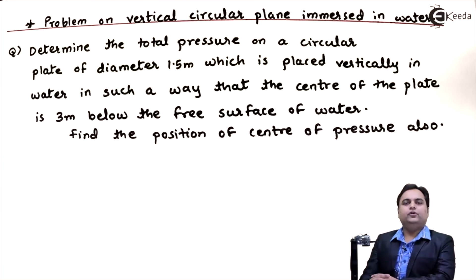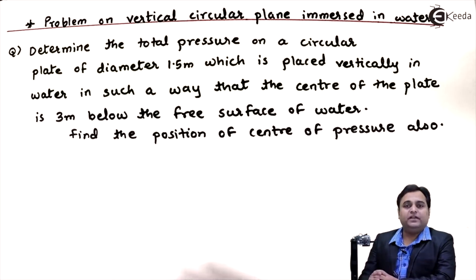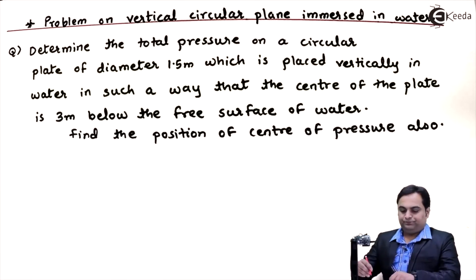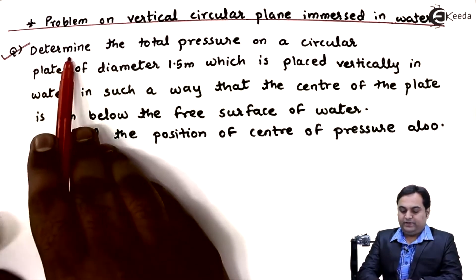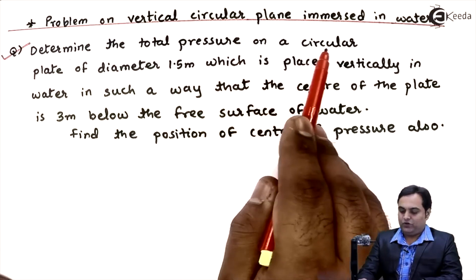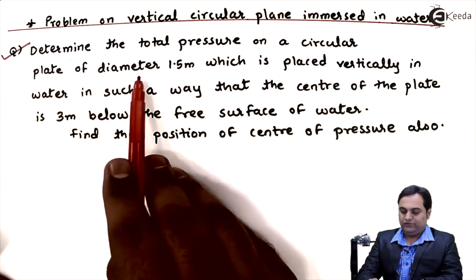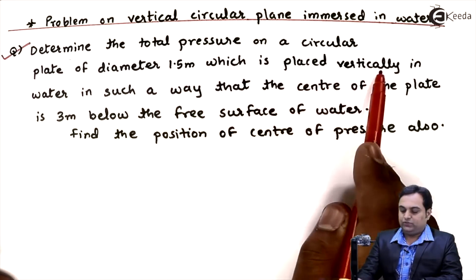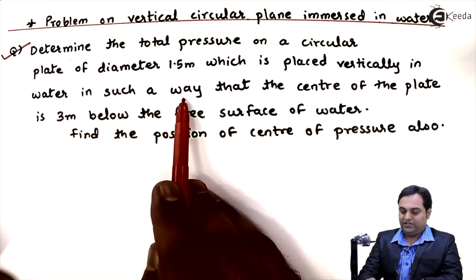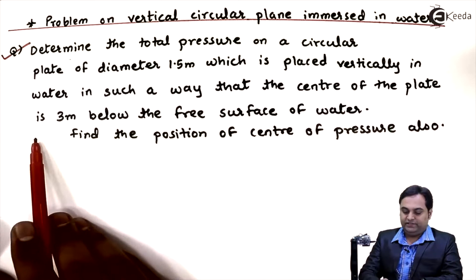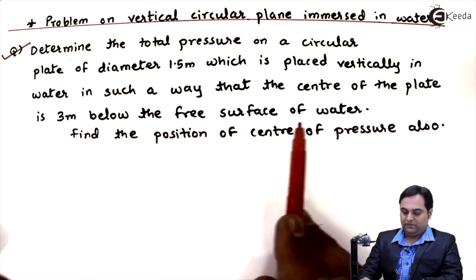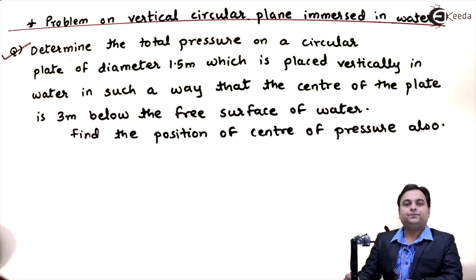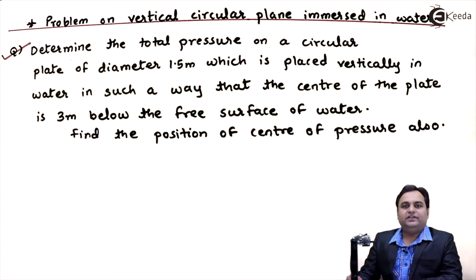In this video we will see a problem: if a circular plane is immersed in water, what is the force acting on it? The problem is: determine the total pressure on a circular plate of diameter 1.5 meter, which is placed vertically in water such that the center of the plate is 3 meter below the free surface of water. Find the position of center of pressure also.